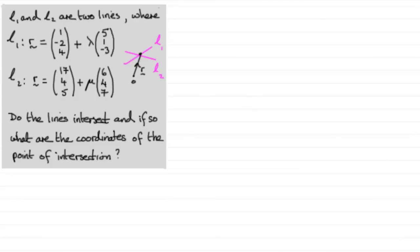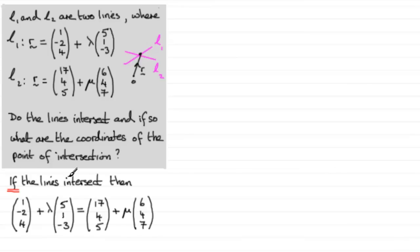So, to do a problem like this then, what we say is that if the lines are to intersect, then we can expect this vector for L1 to equal this vector for L2 for some value of lambda and mu. And that's what I've written down here. And to solve a question like this then, this vector equation, what we do is we compare the i, j and k components.